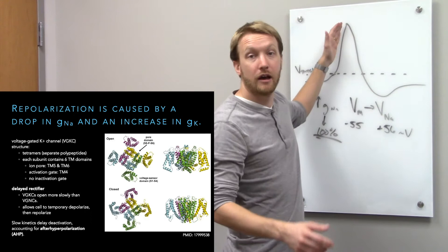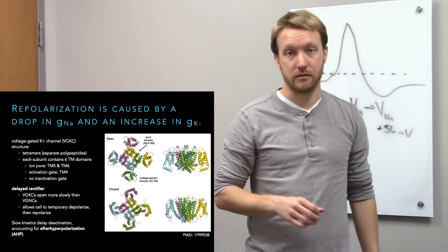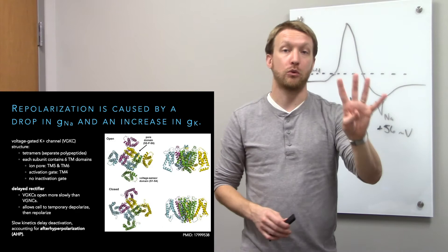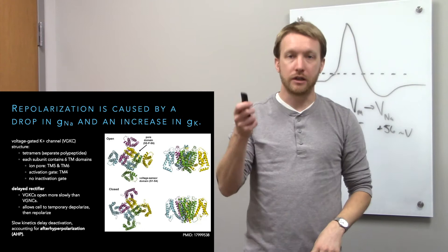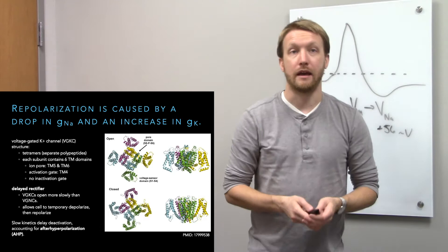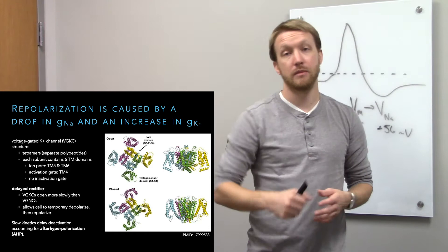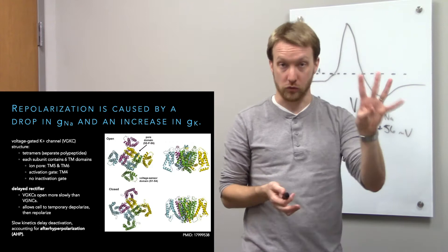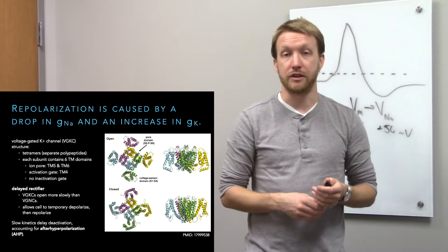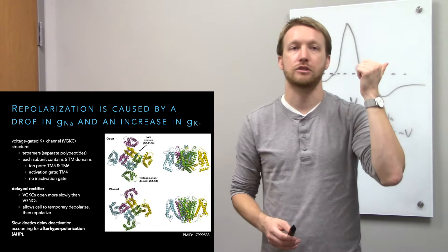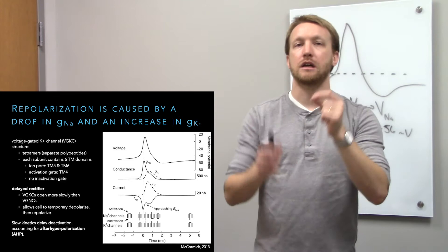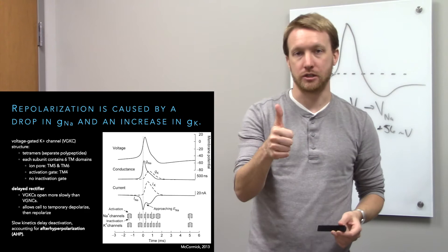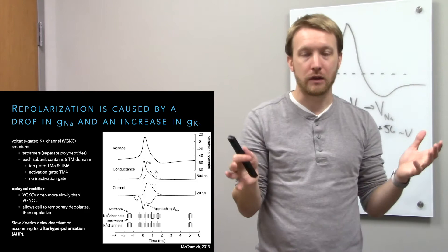The inactivation of sodium channels prevents further depolarization and helps drive repolarization, but what really drives repolarization is an increase in potassium conductance. Voltage-gated potassium channels are very similar to sodium channels, but are tetramers of four distinct polypeptides — no intracellular and extracellular loops, and therefore no inactivation gate. Same ion pore, same activation gate, same six transmembrane domains per subunit. They are slower — the delayed rectifier. The sodium conductance comes on before potassium conductance, allowing depolarization then repolarization.